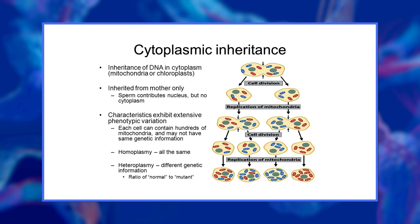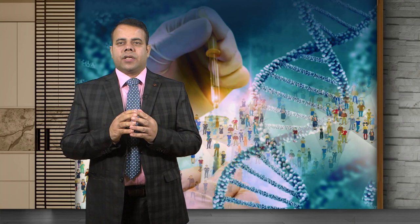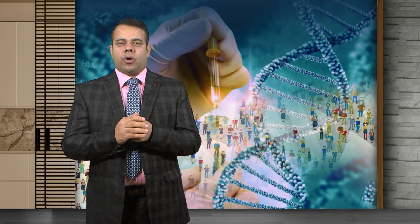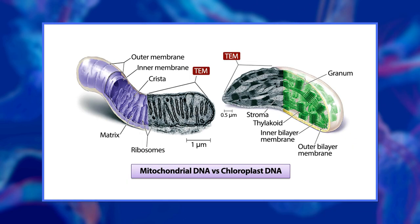Cytoplasmic inheritance is also known as organelle inheritance. The factors governing the cytoplasmic inheritance are called plasmon or plasmagenes, which are present in the chloroplasts — that is CpDNA — or mitochondria — that is mitochondrial DNA. The characters which are inherited by plasmagenes are inherited in a uniparental fashion by the female. Therefore, it shows reciprocal differences in the F1 generation.